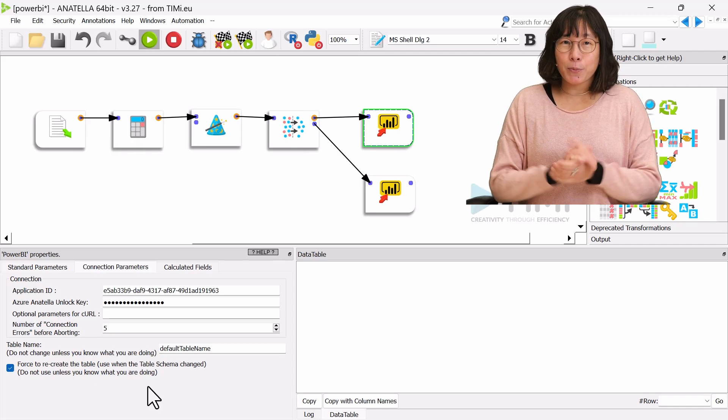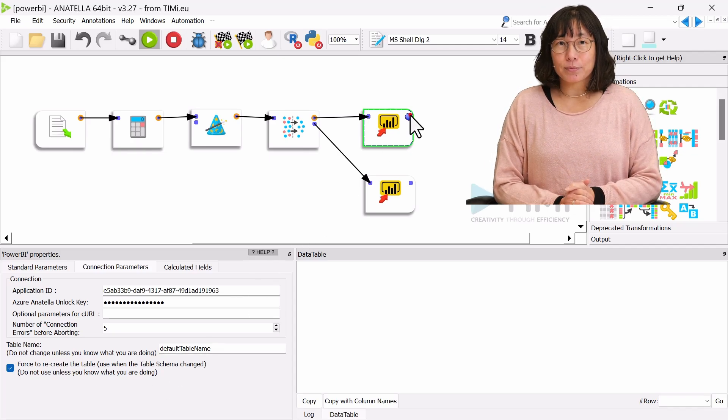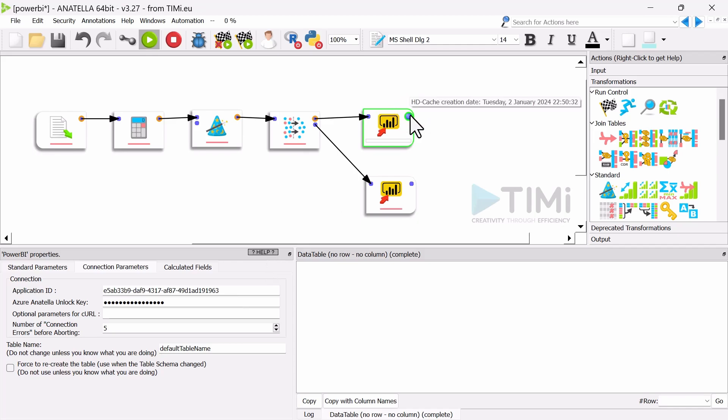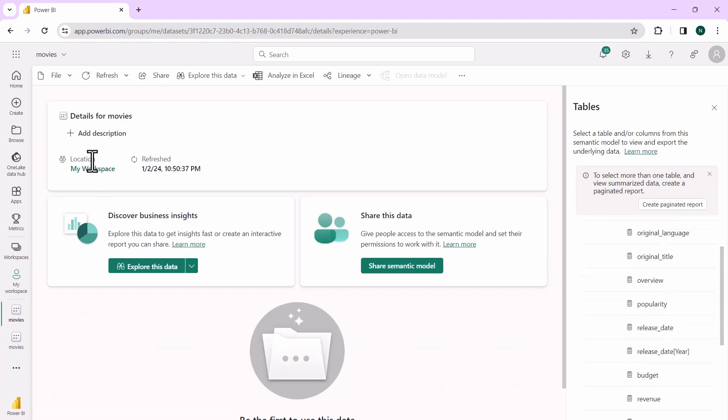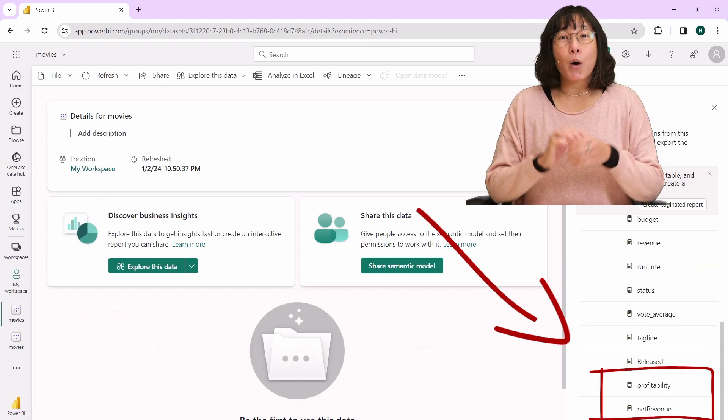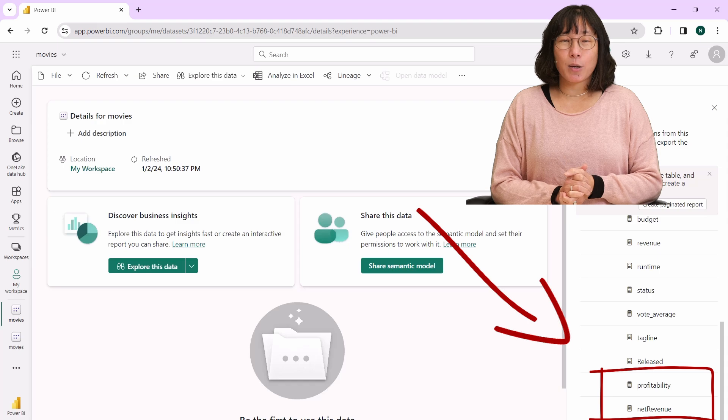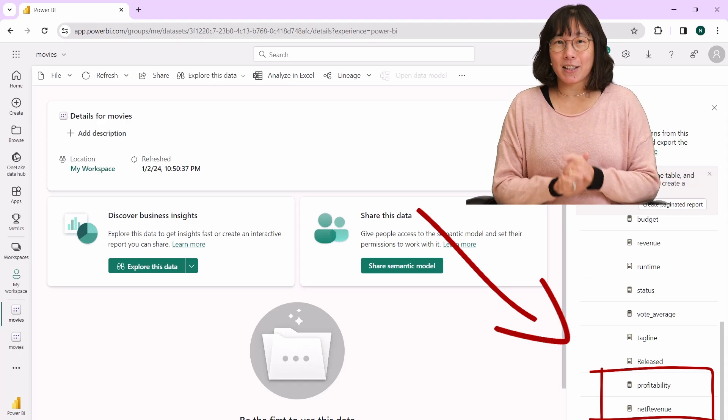Now, let's run the Power BI box again. Yes, you can see here our two new calculated fields: profitability and net revenue.